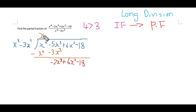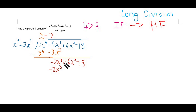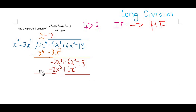We multiply x³ by negative 2 to match the negative 2x³ term, giving negative 2x³. Then negative 3x² multiplied by negative 2 gives positive 6x². Subtracting: negative 2x³ minus negative 2x³ gives 0, and 6x² minus positive 6x² gives 0. Then negative 18 minus nothing gives negative 18.